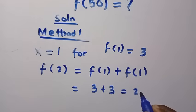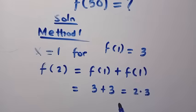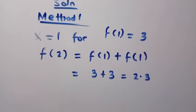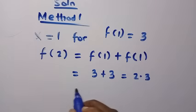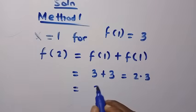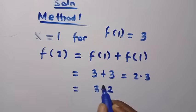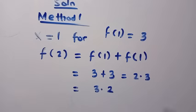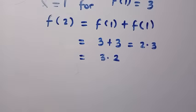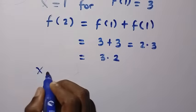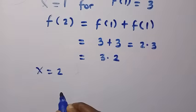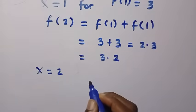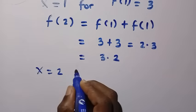So 3 + 3 gives us 6, which we can also write as 3 multiplied by 2. We prefer to write it as 3 × 2 for a reason that will become clear. Now let's try x = 2.